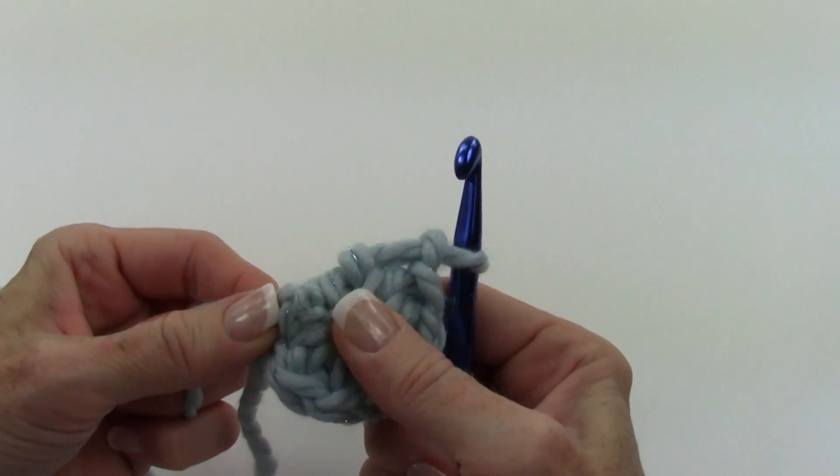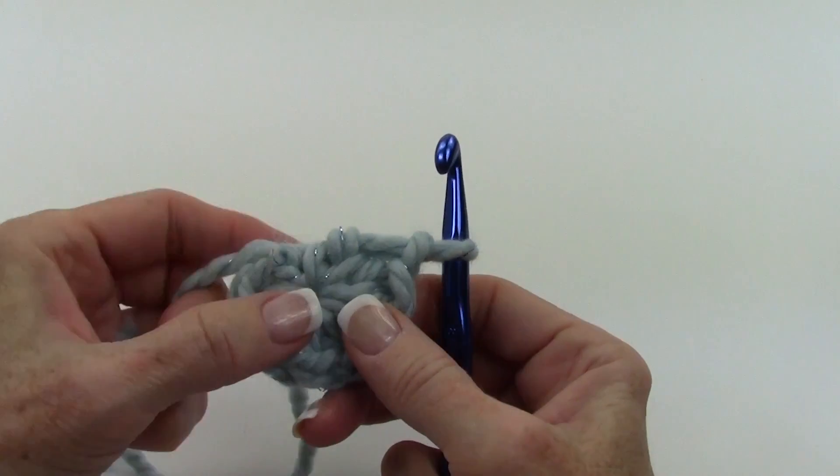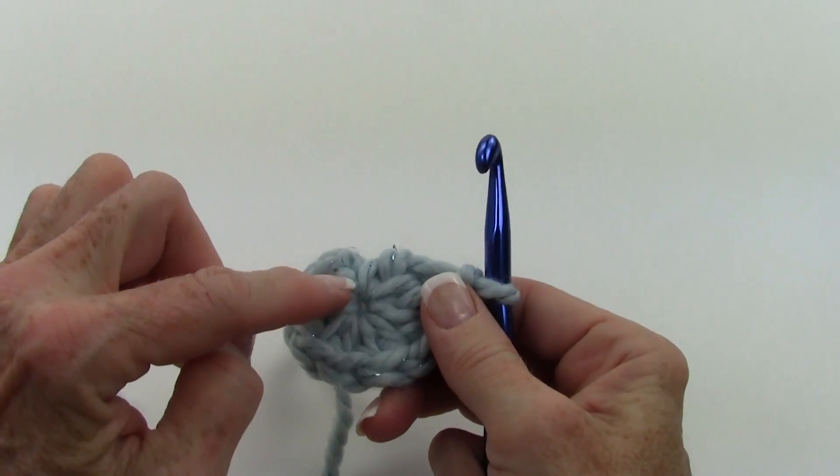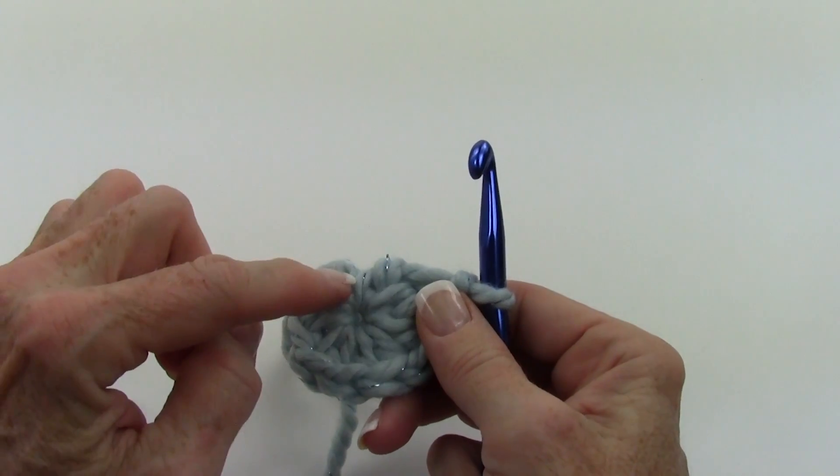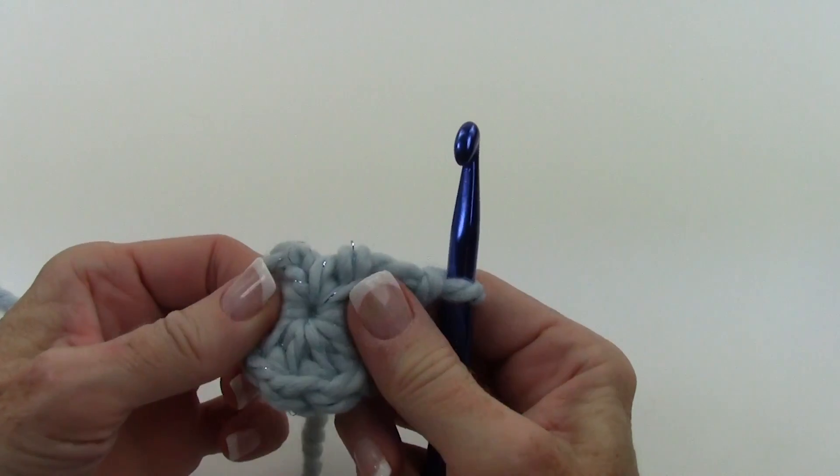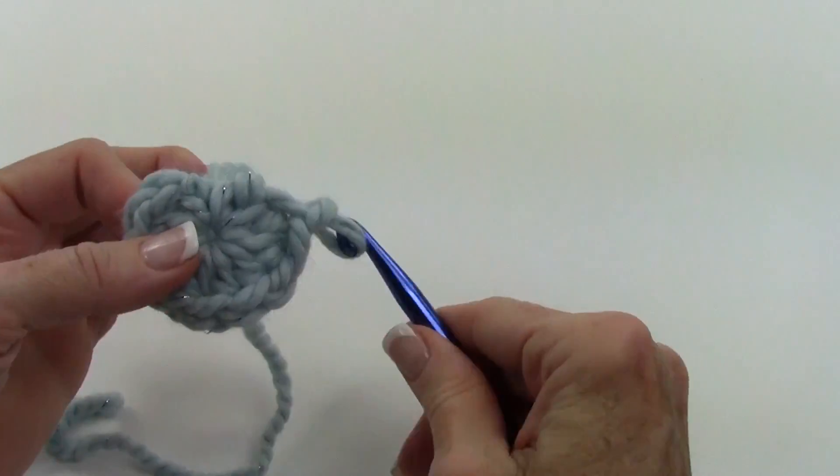There. And there's no bulky part in there where normally if you do like a chain three, chain four join to form a ring, there's some bulk underneath the stitches. But this is real flat in here.